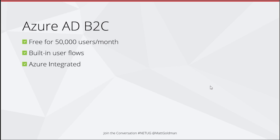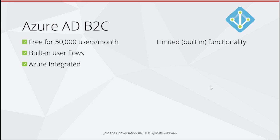Azure ADB2C is free for 50,000 users a month — much more generous than Auth0. Once you go over Auth0's free tier it gets expensive quickly, whereas ADB2C pricing is more incremental. ADB2C has built-in user flows: login, sign-up, email verification, forgot password. It's Azure-integrated, which enterprise IT departments like. It has some limited built-in functionality but is extensible, and you can use your existing .NET skills for that extensibility — which you can't really do with Auth0, which requires a different skill set.